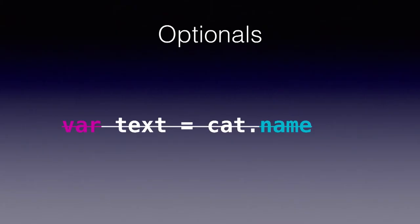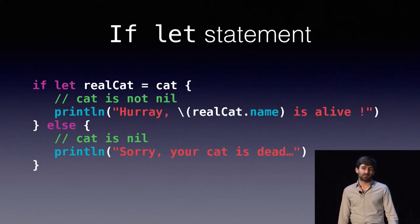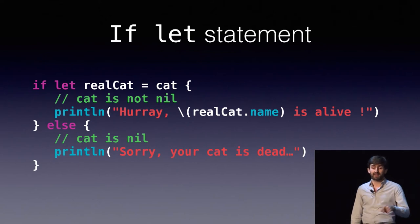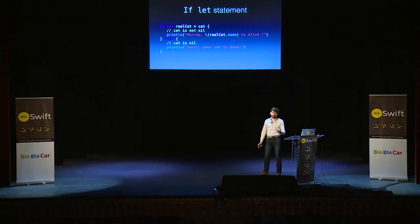Note how the question mark syntax is well-chosen, because it's somehow a question — you can read it as: cat might be a cat, or it might be nil. Which means you cannot really access any property of the cat, like a cat name, because you don't know if cat is actually a cat. So in order to protect access to the name, you have to do checks. You can do that with the if-let statement, which allows you to define a real cat variable — a temporary scoped variable — and in the first branch you can print real cat dot name. Otherwise, well, the cat is dead.